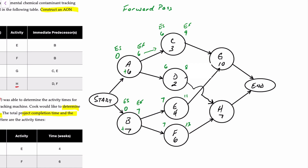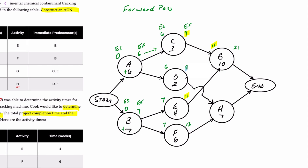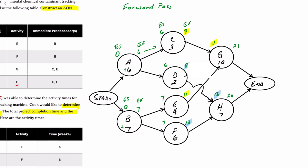Activity G is preceded by both C and E. We have to look for the larger of the two earliest finish times: C finishes at nine weeks, but E finishes at 11 weeks. So the earliest G can start is 11 weeks; it takes 10 weeks, so the earliest it can finish is 21 weeks. For activity H, preceded by D and F: D finishes at eight weeks and F finishes at 13, so we take the larger number — 13 — and add seven, giving 20 weeks. The project completion time is therefore 21 weeks, which is the longest path.